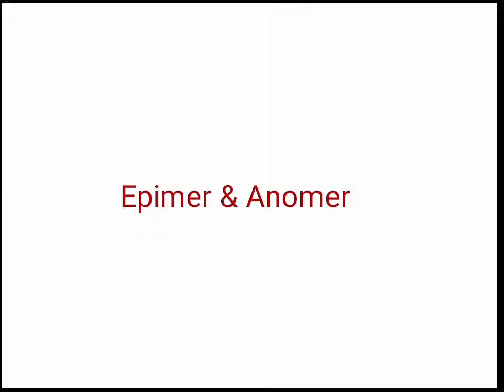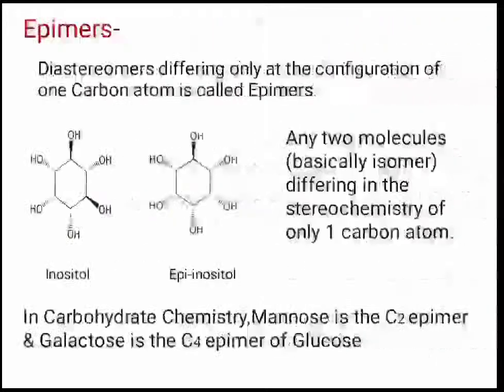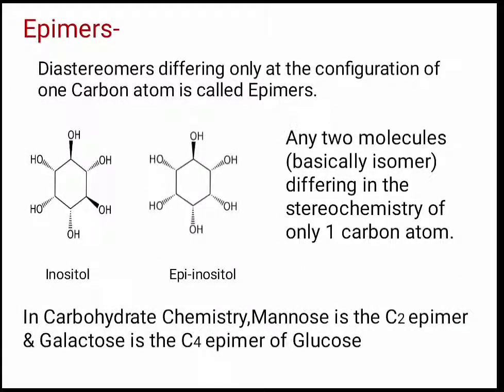Epimers and anomers. Diastereomers differing only in the configuration of one carbon atom are called epimers. That means if you have two diastereomers which are differing only at the configuration of one carbon, that is an epimer.